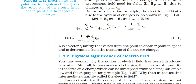Electric field is a vector quantity — this is correct. It varies from one point to another point. When it varies, the magnitude of the electric field can vary, the direction can also vary, and it is possible that both direction and magnitude are varying from point to point.